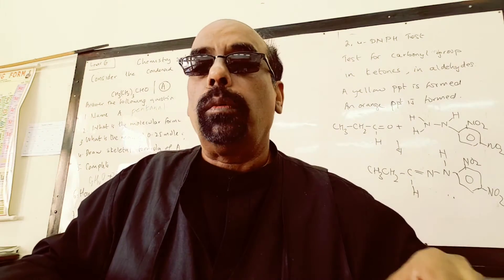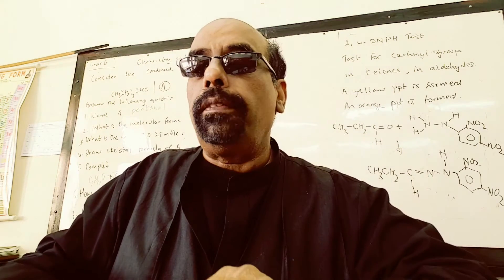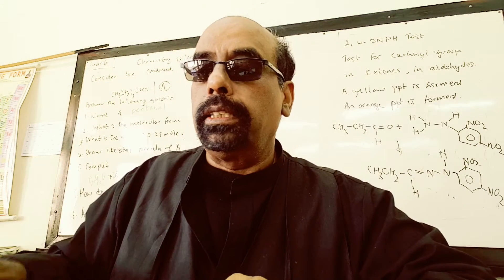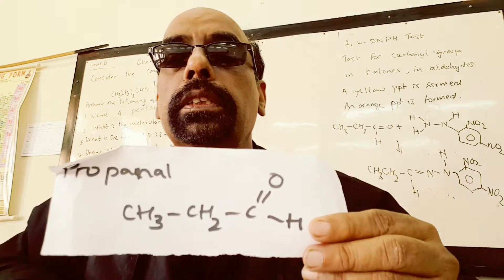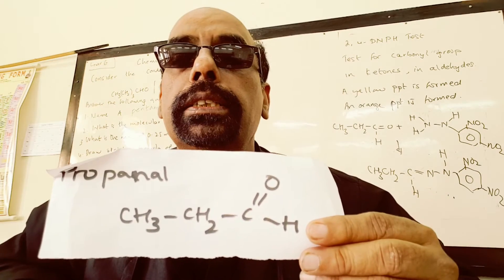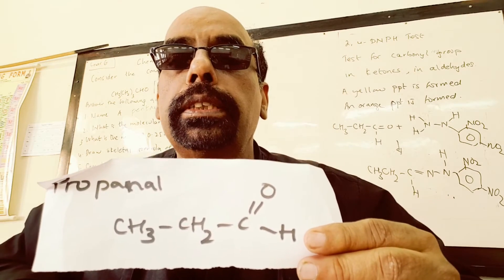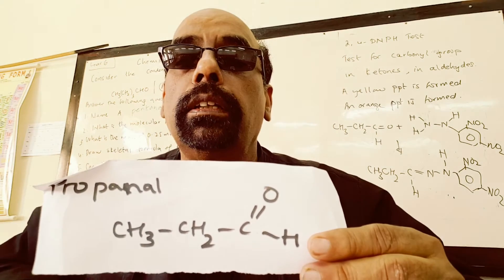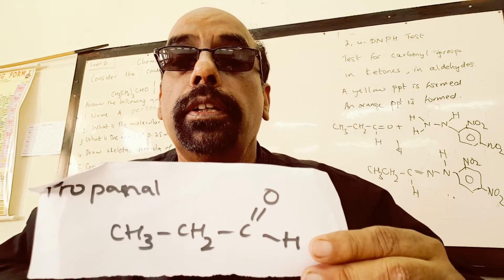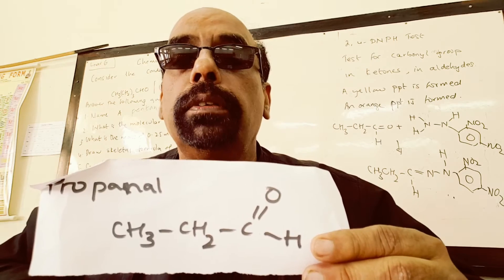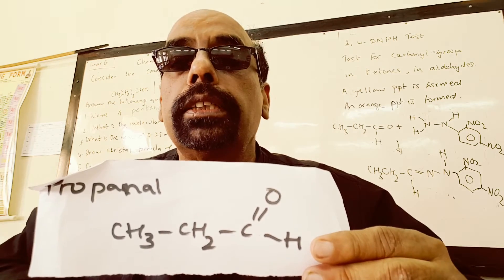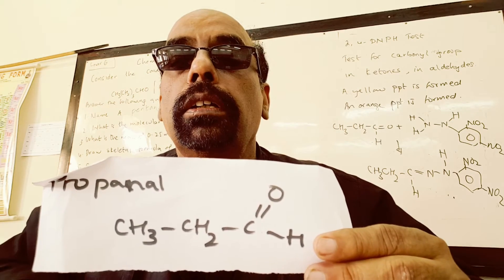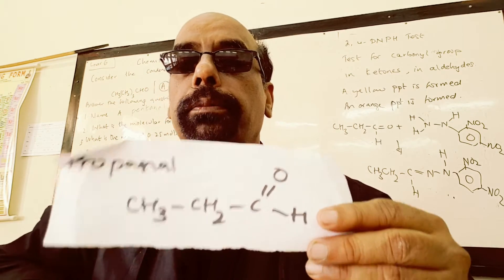One example of an aldehyde is propanal: CH3, CH2, CHO. It contains the aldehyde group, which contains the carbonyl group.